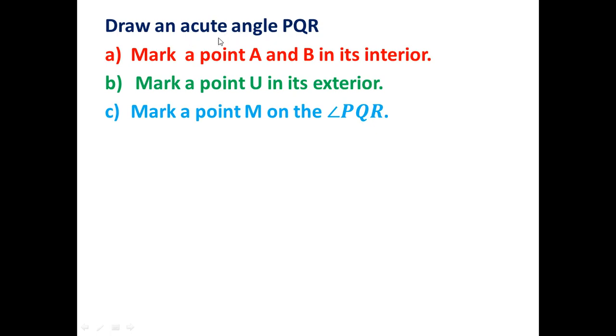An acute angle is that angle whose measure is less than 90. So any angle whose measure is less than 90 degree but more than 0 degree is said to be acute angle. So here firstly let's draw an acute angle.